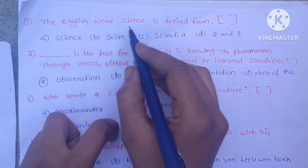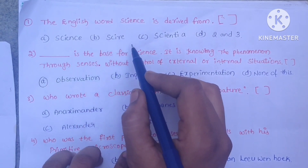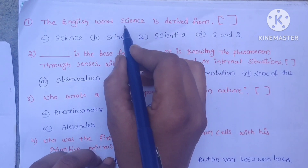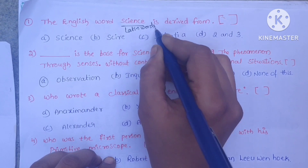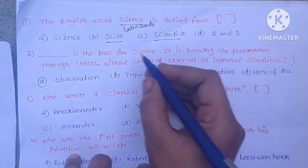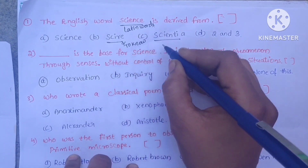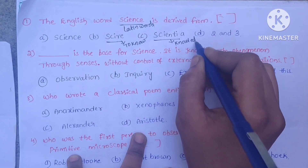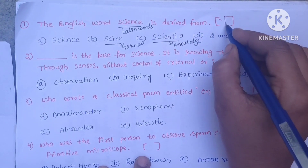The first question is: the English word 'Science' is derived from — A. Science, B. Siree, C. Scientia, D. 2 and 3. The English word Science is derived from two Latin words: 'Siree,' meaning 'to know,' and 'Scientia,' meaning 'knowledge.'